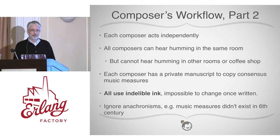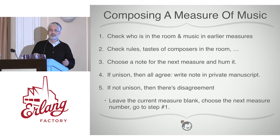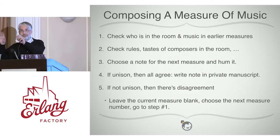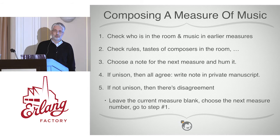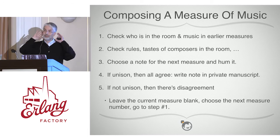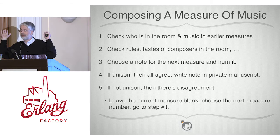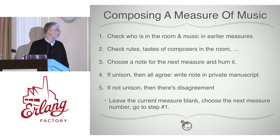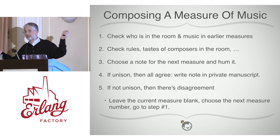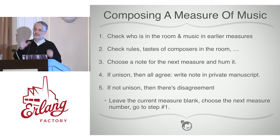Here's how we compose a measure: check who's in the room, consult what was written earlier for melodic continuity, consult our plainchant rules, choose the next note, and hum it while listening to everybody else humming. If everyone hums the same pitch, we've achieved rough consensus — write it in the private manuscript, done. If there is no unison, we have a disagreement, ignore this measure number, choose a larger measure number, and go back to the beginning. Blank measures in manuscripts will be ignored by the publisher, and that's fine.